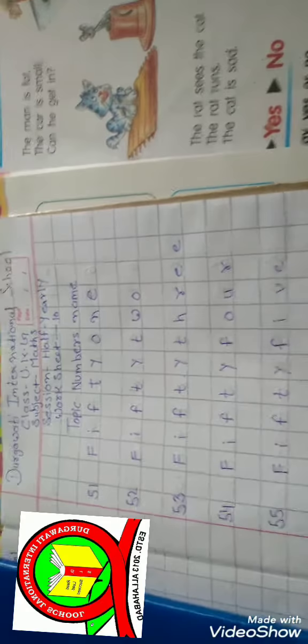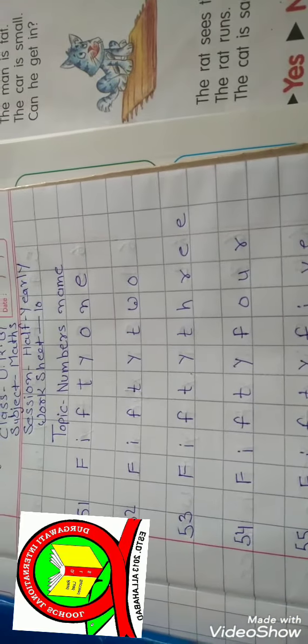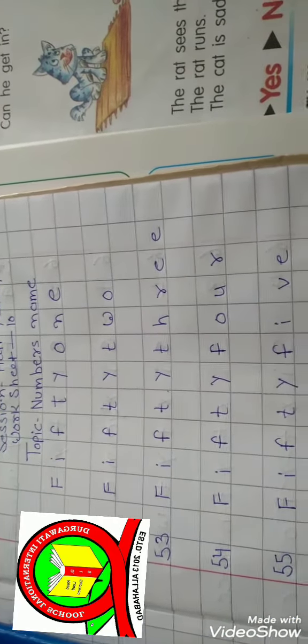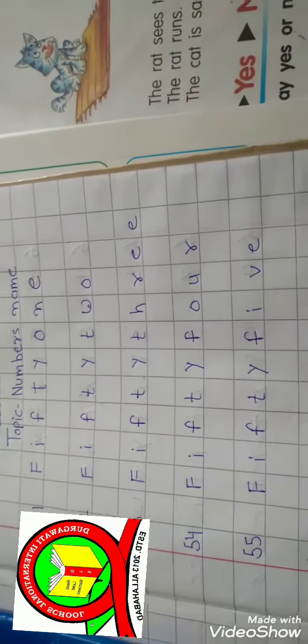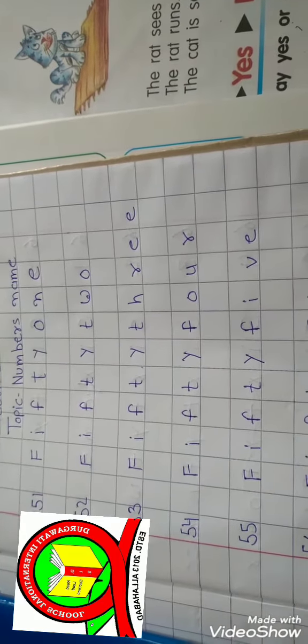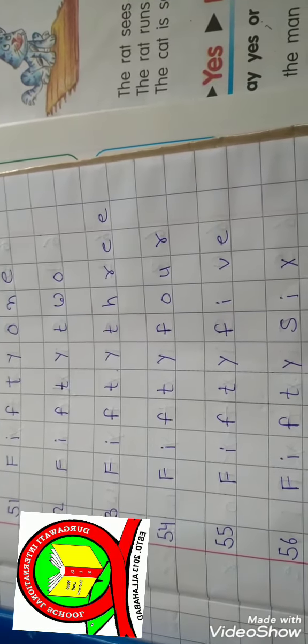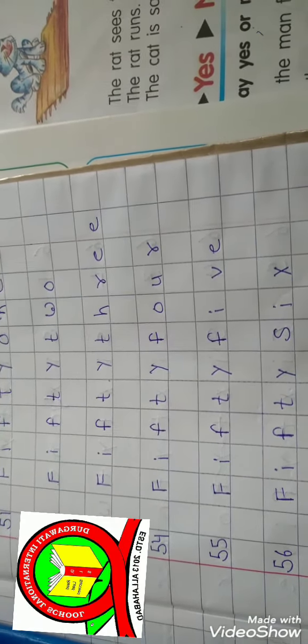F I F T Y O N E, 51. F I F T Y T W O, 52. F I F T Y T H R E E, 53. F I F T Y F O U R, 54. F I F T Y F I V E, 55.